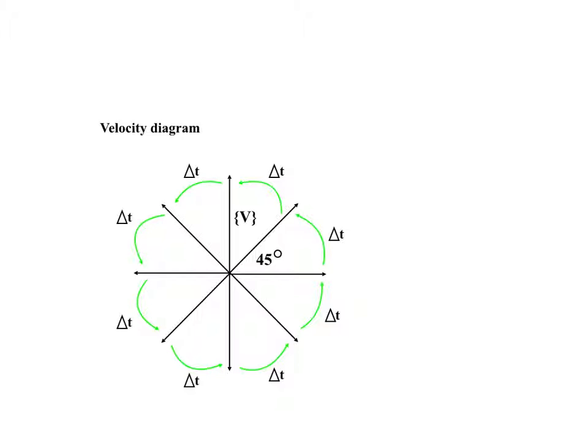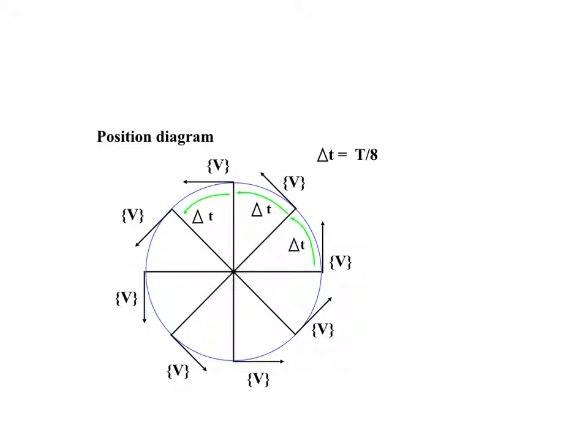But what is delta t? Well, as you can see from our position diagram, it takes eight delta t's to make one cycle around the orbit. In other words, delta t equals T divided by 8, where capital T is the period of the orbit.